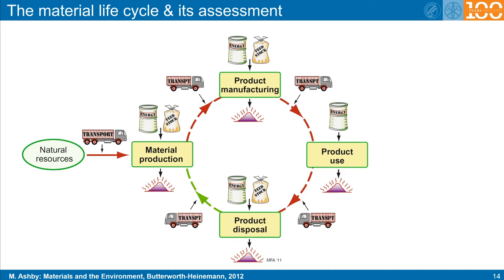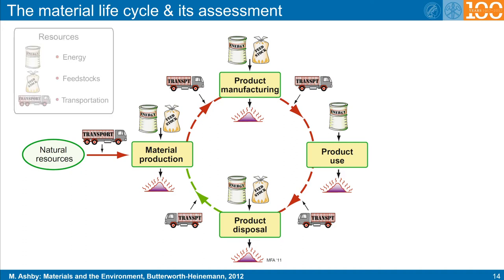At the beginning are the natural resources and the material production. This step must consider the required energy, the feedstock materials consumed, all transportation means required, as well as all the emissions created during production. Next is a typical product manufacturing step, where the same input and output quantities as well as the inbound and outbound transportation are taken into account.